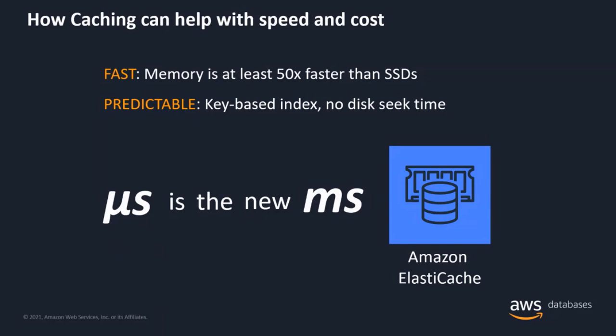ElastiCache is the solution for this problem because it will eliminate the need to repeatedly read the same data from your primary relational database. It meets the performance requirements better because it is an in-memory data store.